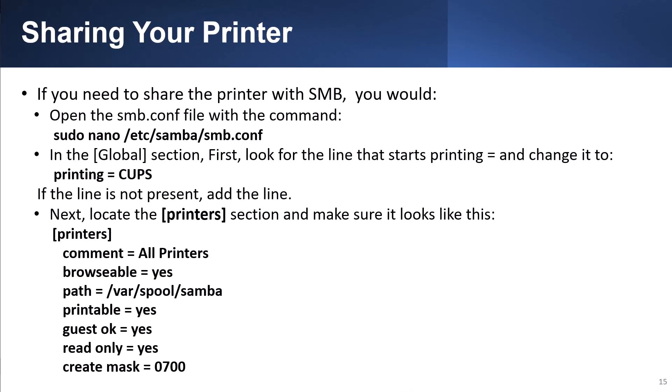If you need to share the printer with SMB, you would open the SMB configuration file with the command: sudo nano /etc/samba/smb.conf. In the global section, first look for the line that starts with 'printing =' and change it to 'printing = cups'. If the line is not present, add the line. Next, locate the printer section and make sure it looks like what is shown on the screen.